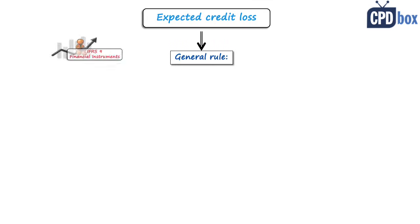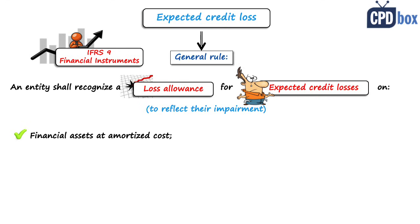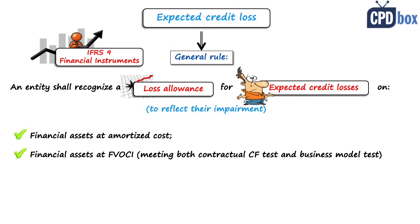You do not apply expected credit loss on all financial assets. The general rule under IFRS 9 says that an entity shall recognize a loss allowance for expected credit losses on selected financial assets to reflect their impairment. These include financial assets at amortized cost, financial assets at fair value through other comprehensive income which meet the contractual cash flows test and whose business model is achieved via collecting contractual cash flows and selling. These first two types are basically debt securities like bonds, receivables and loans — no equity instruments or shares.